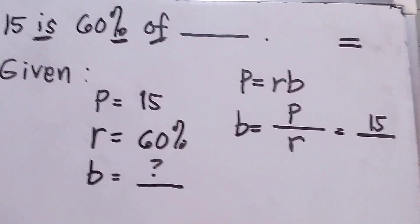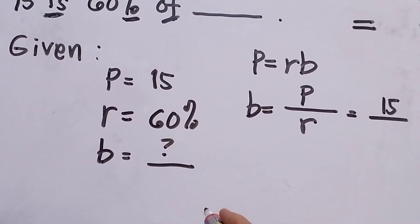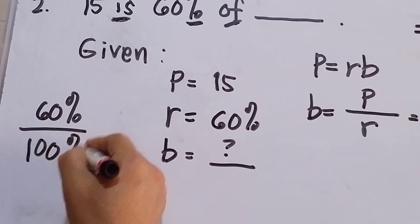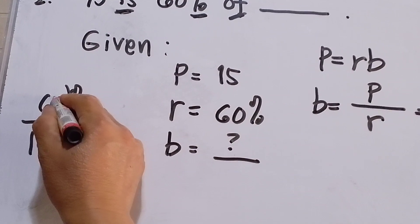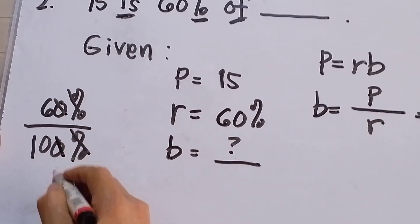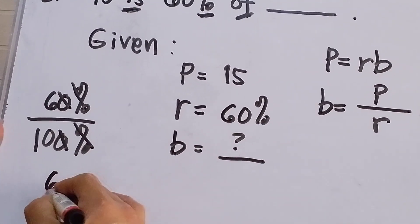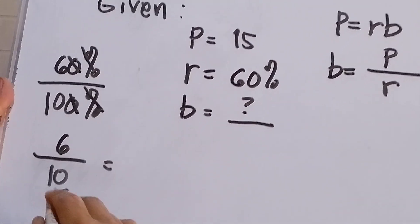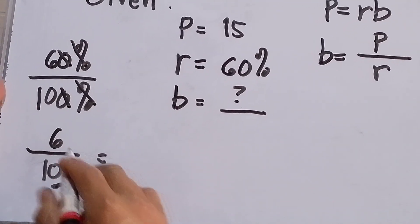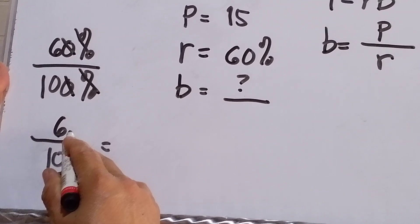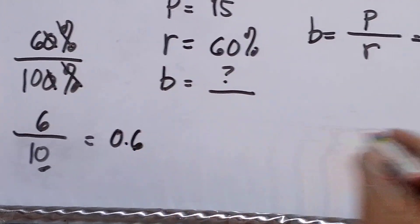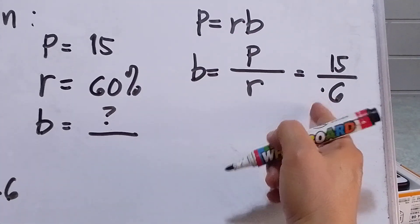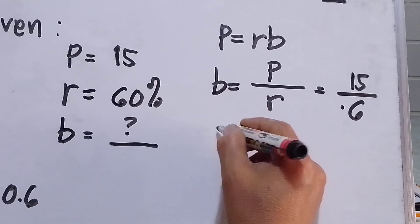P is 15 and R is 60 percent. To convert 60 percent to decimal, we divide by 100 and cross out the two zeros, giving 6 over 10. Since there is only one zero, we move one decimal place to the left, so 60 percent equals 0.6.